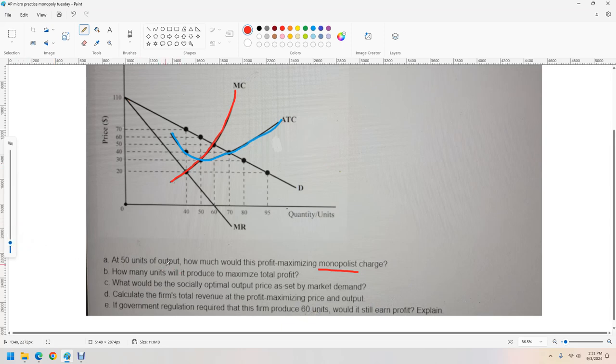At 50 units of output - output is down here, that's the quantity. Output and quantity are synonyms. How much would this profit maximizing monopolist charge? Just go to 50 and follow it up to where it hits the demand curve, because that shows the most we're able to charge to sell that many units. That is 60 dollars.